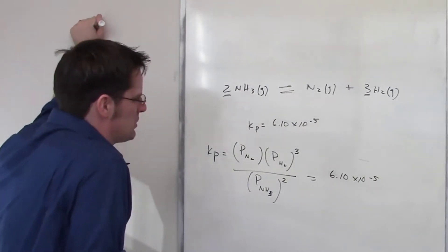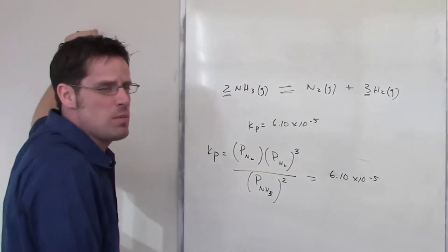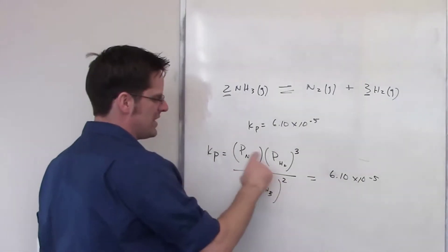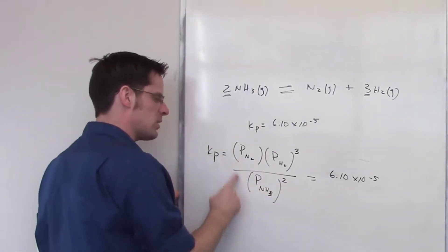Is it a big number or a small number? Well, that's a really small number. It's much, much smaller than 1. So which of these two things is favored, the numerator or the denominator?